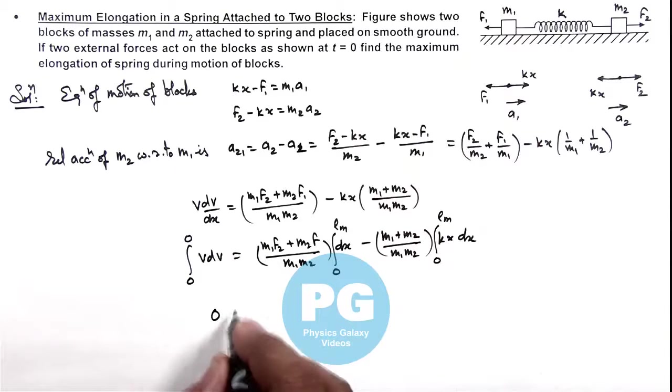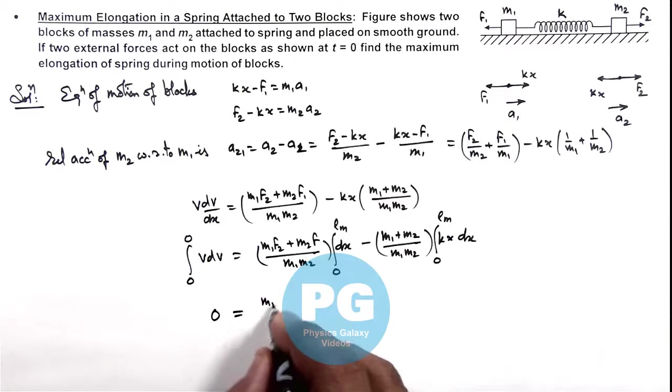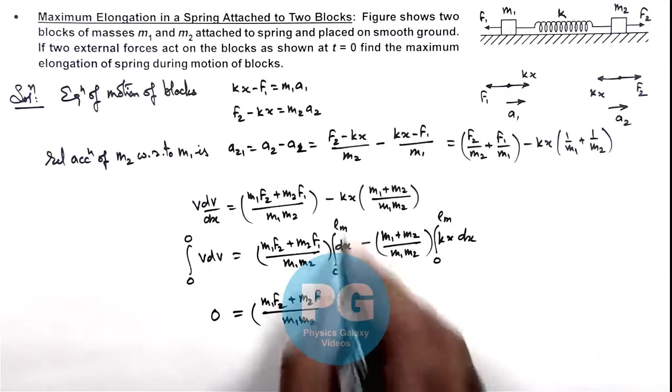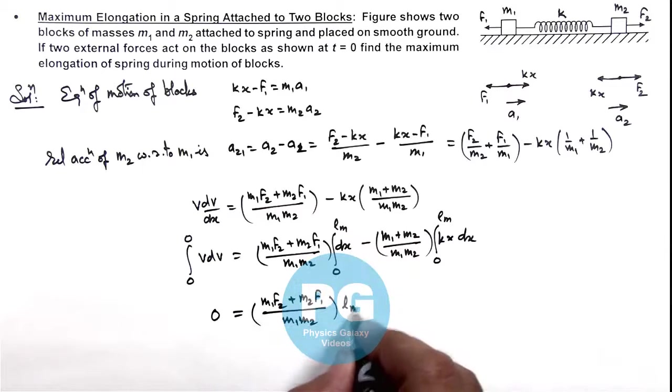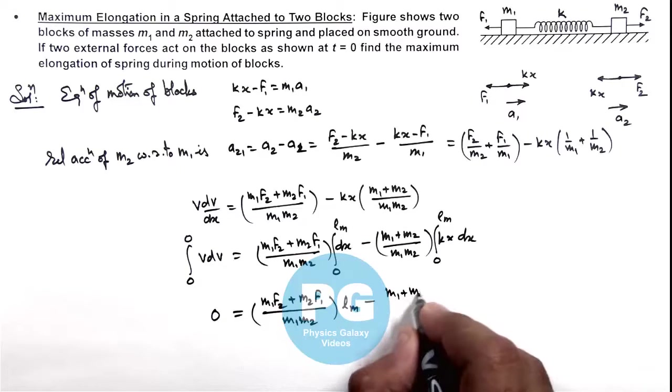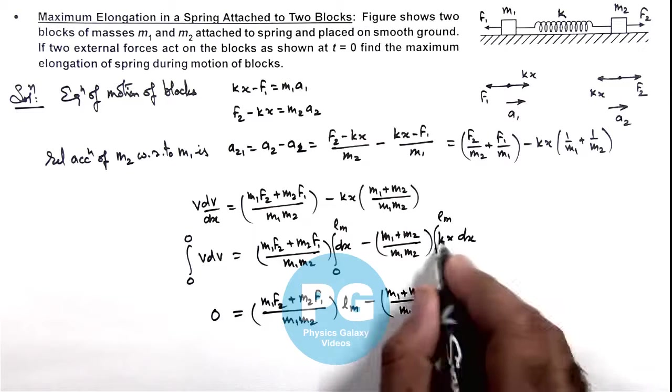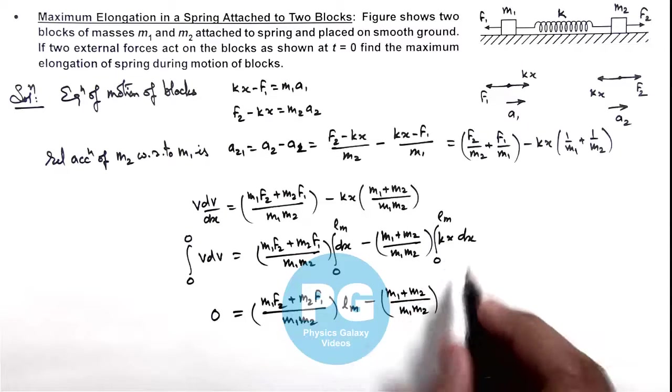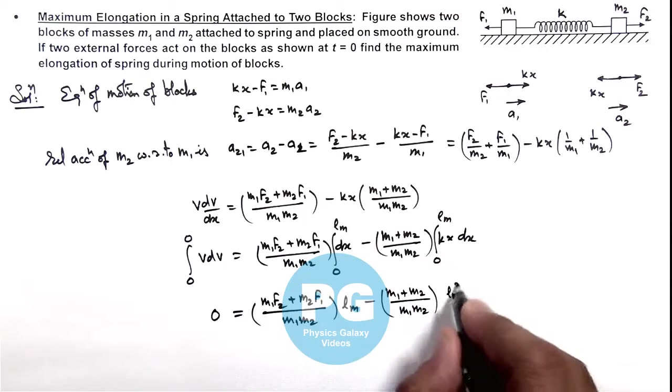So this can be written as zero is equal to m₁f₂ plus m₂f₁ divided by m₁m₂. And integration of dx would be x and on substituting limit it gives us lₘ minus m₁ plus m₂ upon m₁m₂. k is a constant, integration of x will be x square by 2. So this will be lₘ square by 2.